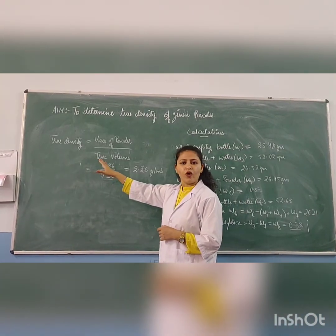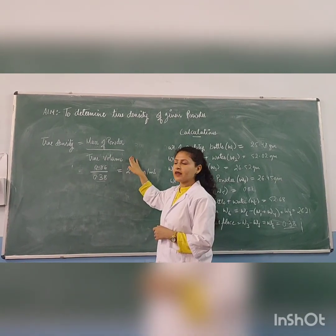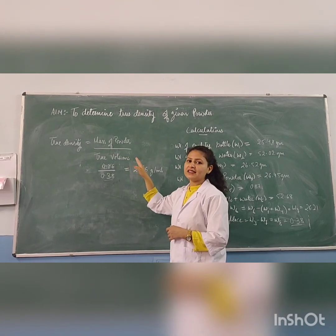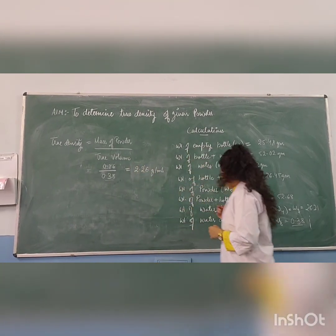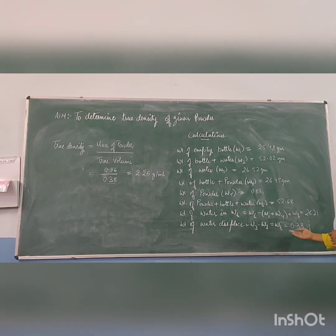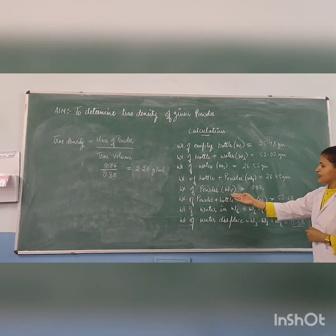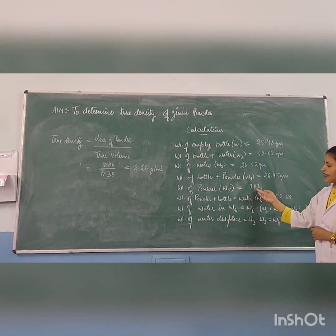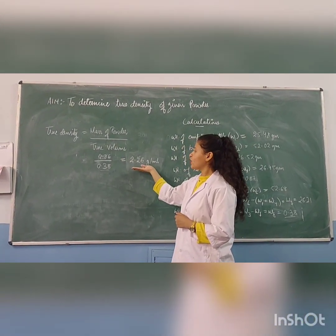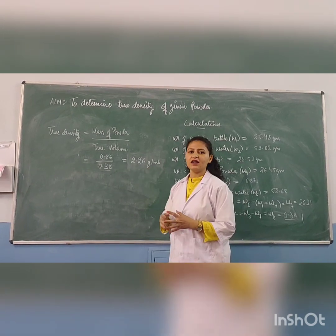To calculate the true density, the formula used is mass of the powder divided by the true volume. The true volume is the amount of water displaced by the powder, which is W8, already calculated as 0.38. The mass of the powder is W5, which is 0.87 grams. By putting these values into the formula, the true density was found to be 2.26 grams per mL.